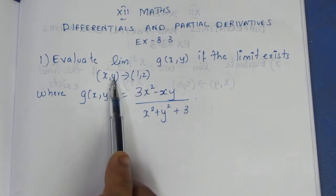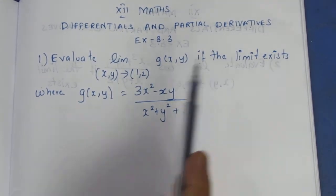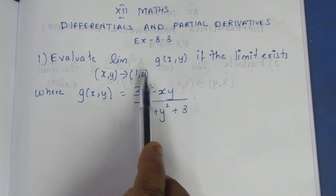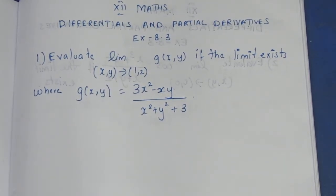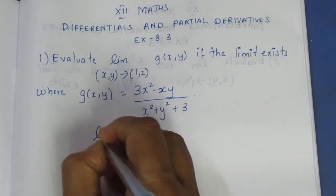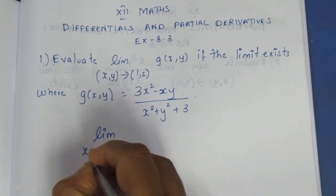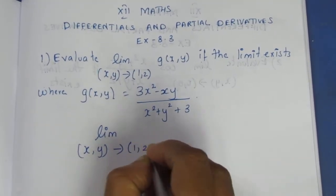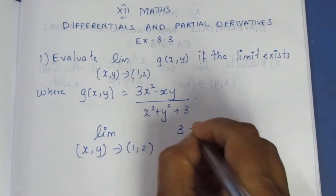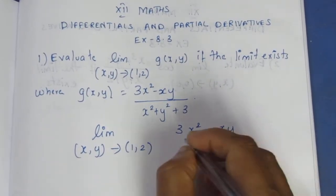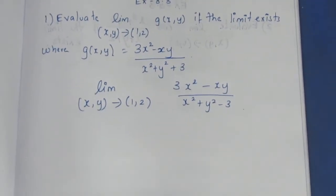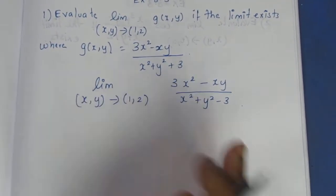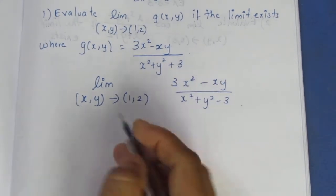Direct and easy sum. We want to substitute x to 1 and y to 2. Limit as (x,y) belongs to (1,2) of G(x,y) equals 3x squared minus xy, divided by x squared plus y squared minus 3. Now substitute x to 1 and y to 2.